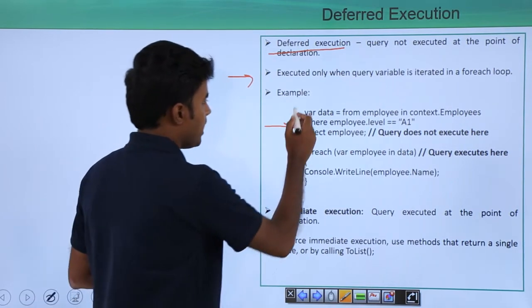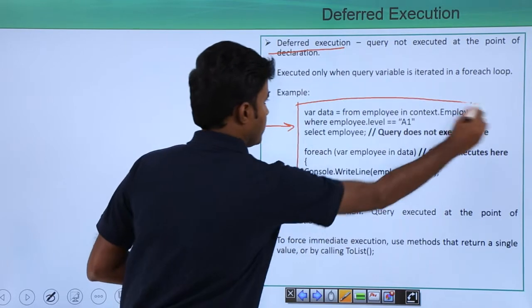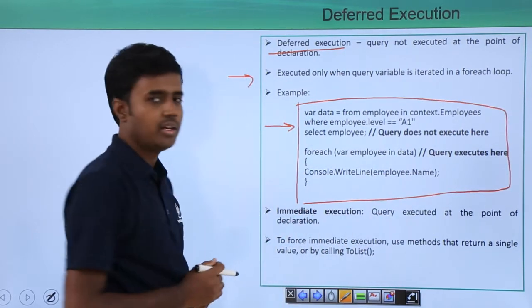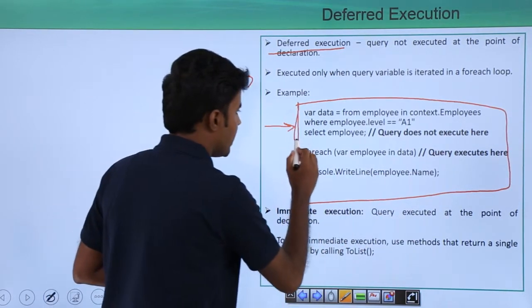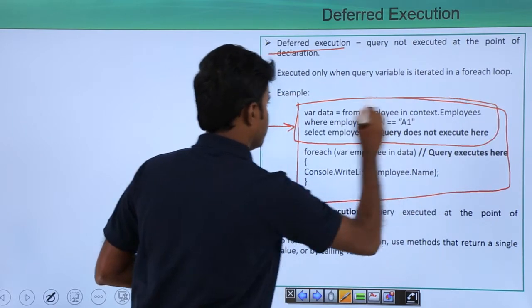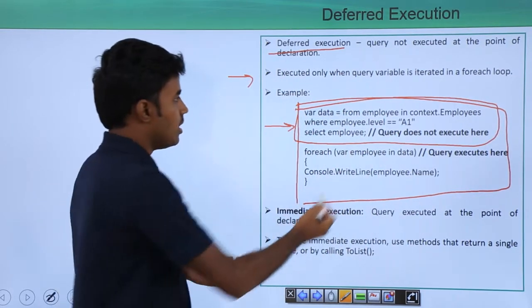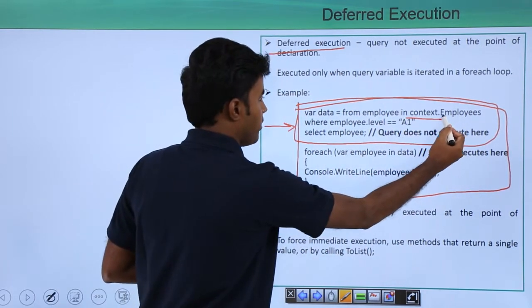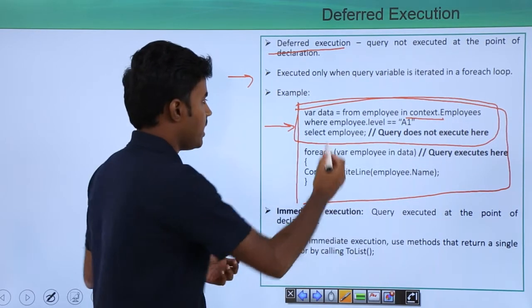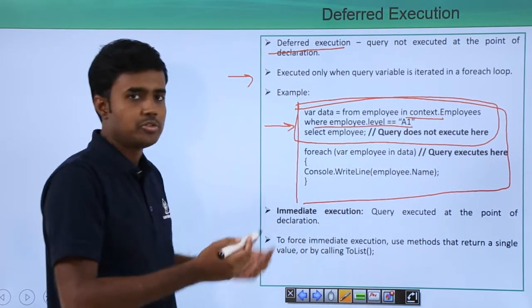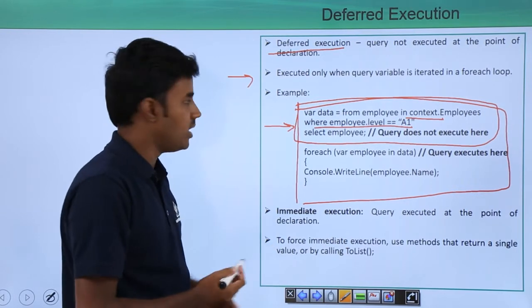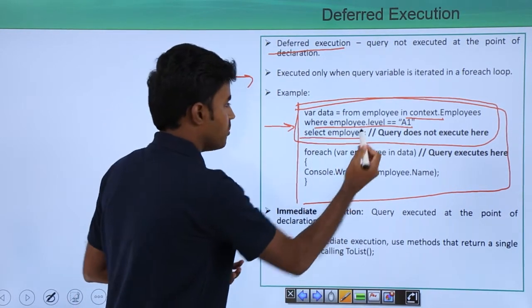For example, I have a query over here. This is my entire query and this is the place where I am defining it. Basically, I am using the context object to fetch the list of employees, then I am using a where condition to select employees at a certain level, and then selecting that employee.